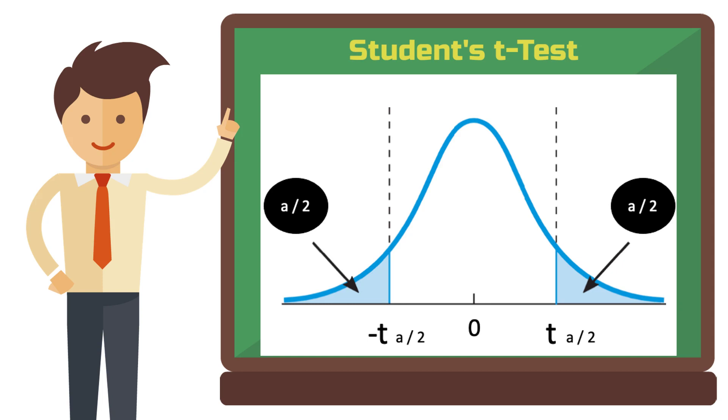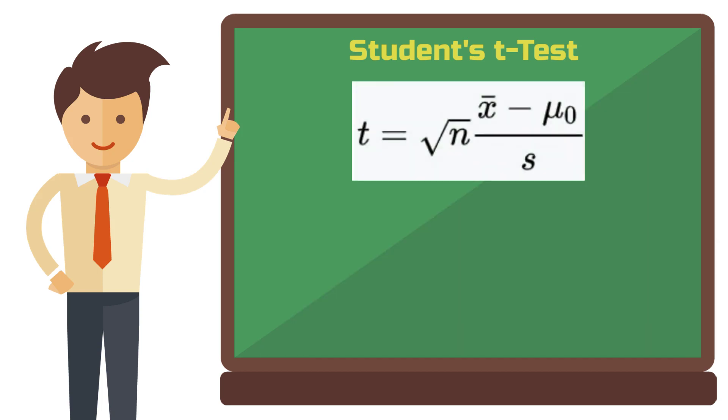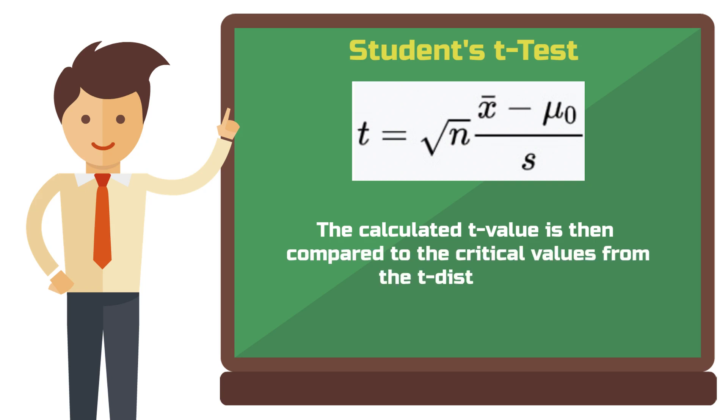The t-distribution also follows the shape of a bell curve. For the t-test, a t-value is calculated using a specific formula. The formula for a t-test comparing a sample mean to a hypothetical mean, so the target value that I just mentioned, is given by this formula. The calculated t-value is then compared to the critical values from the t-distribution based on the degrees of freedom, which in this context is typically n-1, and the desired level of significance, of course.